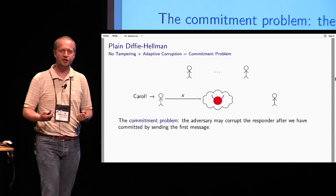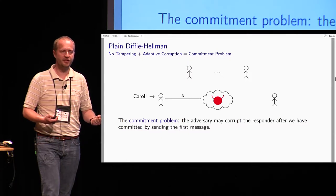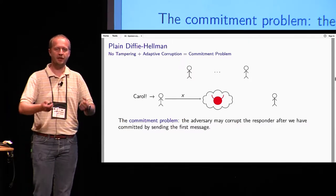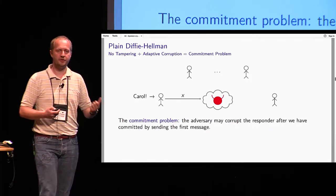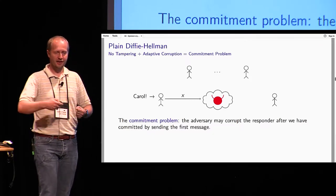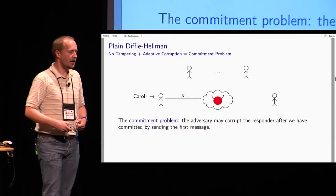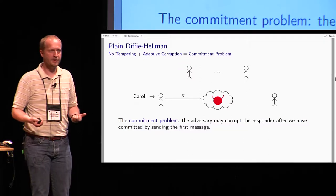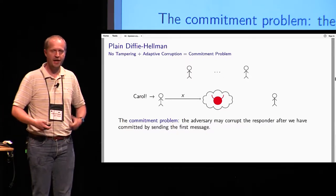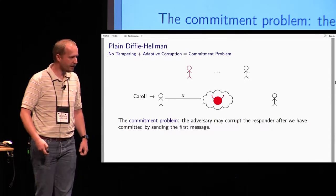This is a problem because we can't use the strategy we just used. That strategy depended on knowing Carol's status: if Carol was dishonest, we chose our message as g to some exponent; if Bob was honest, we chose something from a DH tuple. But now, if we don't know whether Carol will be honest or dishonest, we face a dilemma. If we choose from a DH tuple and Carol turns out to be corrupted, we can't find the key. If we assume she'll be corrupted and choose g to the a, we have no guarantee our key looks random. This is the commitment problem.